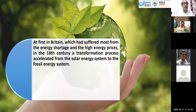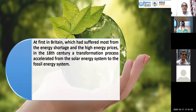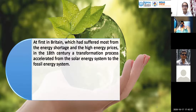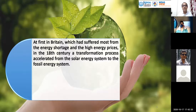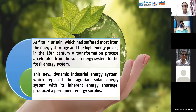Britain, which had suffered most from the energy shortage and high energy prices in the 18th century, accelerated the transformation from the solar energy system to the fossil energy system. From the agrarian solar energy system, we explored that fossil fuels could sustain our system and run our society.